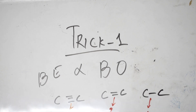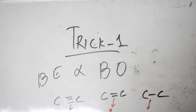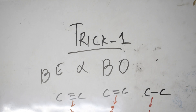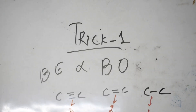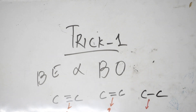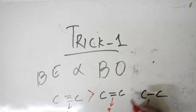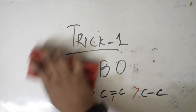Which will require more bond energy? Obviously the triple bond. Triple bond requires more energy to break. So remember: triple bond has more bond energy compared to double bond, which has more than single bond. Bond energy is directly proportional to bond order.